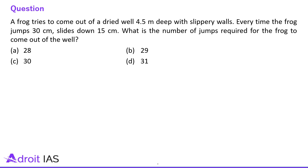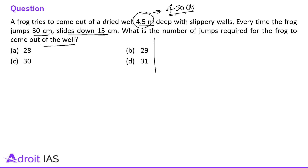A frog tries to come out of a dried well 4.5 meters deep with slippery walls. Every time the frog jumps 30 cm and slides down 15 cm. What is the number of jumps required for the frog to come out of the well? So 4.5 meters converts to 450 cm, which is the depth of the well. So the frog has to climb 450 cm to reach the top.